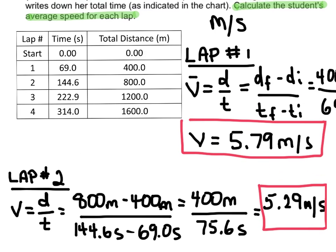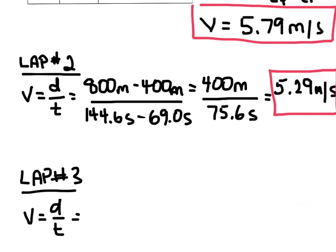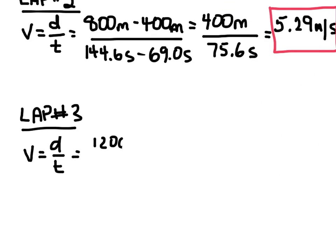Where she started was the previous finishing of the other lap, so 800. So we're going to have 1,200 meters minus 800 meters.